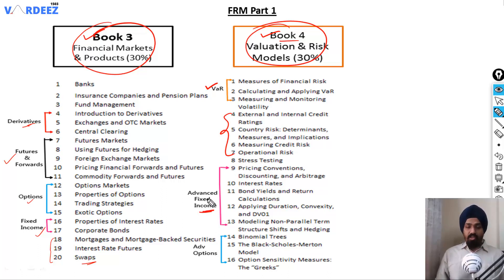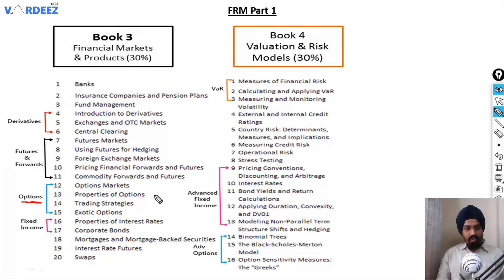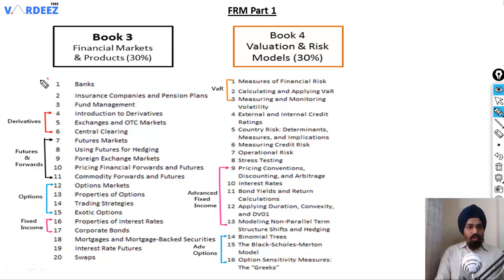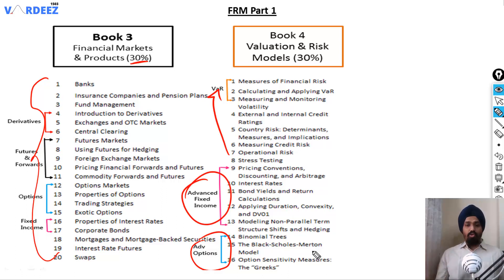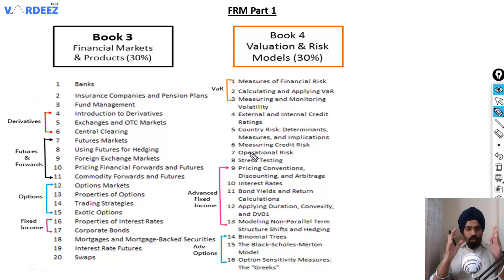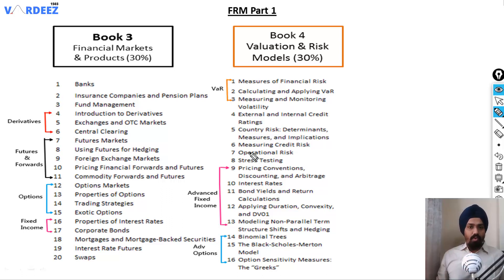Book 4 also covers advanced fixed income topics and advanced options topics. So if you've completed options in Book 3, you can jump to advanced options in Book 4. If you've completed basic fixed income, you can move to advanced fixed income — that's one approach. Alternatively, once you've completed all of FMP, you can then tackle the advanced topics sequentially. Having this visual layout gives you a logical thought process as to where to start and how the progression flows naturally.